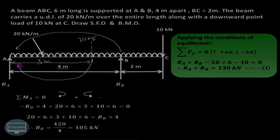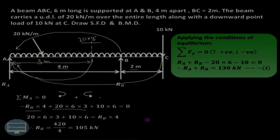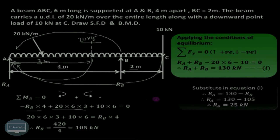The UDL produces a clockwise moment about A, so it is positive: 20 into 6 is the total UDL load, converted into a point load acting at the center. The point load also produces a clockwise moment about A: 10 into the perpendicular distance from C to A, which is 4 plus 2 equals 6 meters. Transferring the negative term and solving, we get RB equal to 105 kN. Substituting back into equation 1, RA equals 130 minus 105, that is 25 kN.